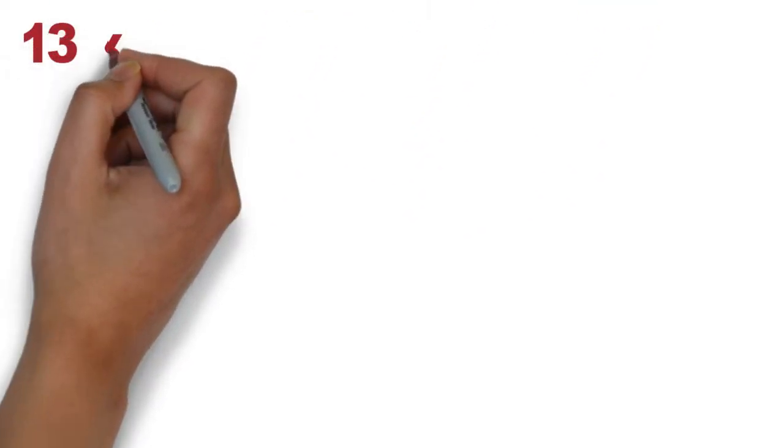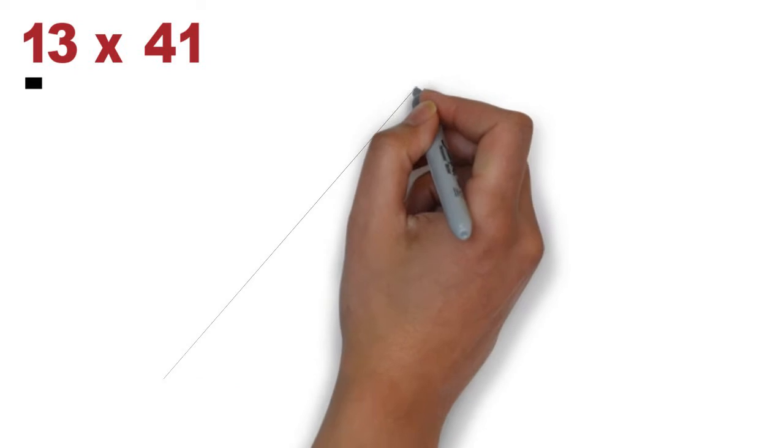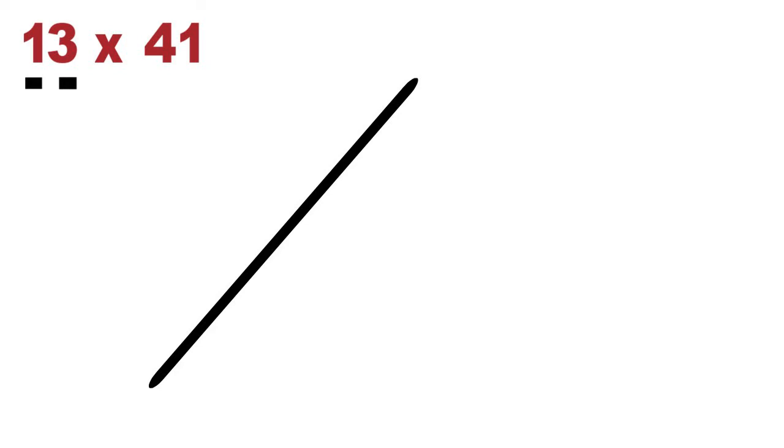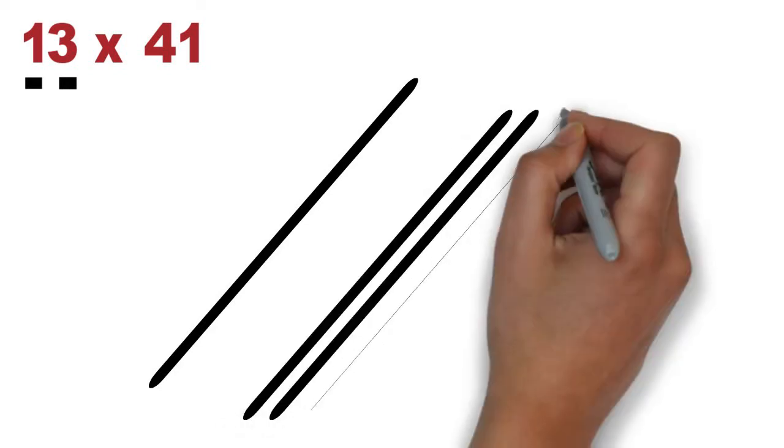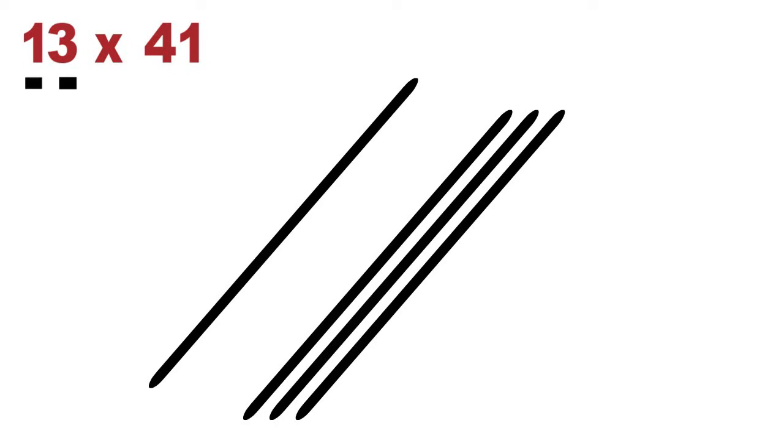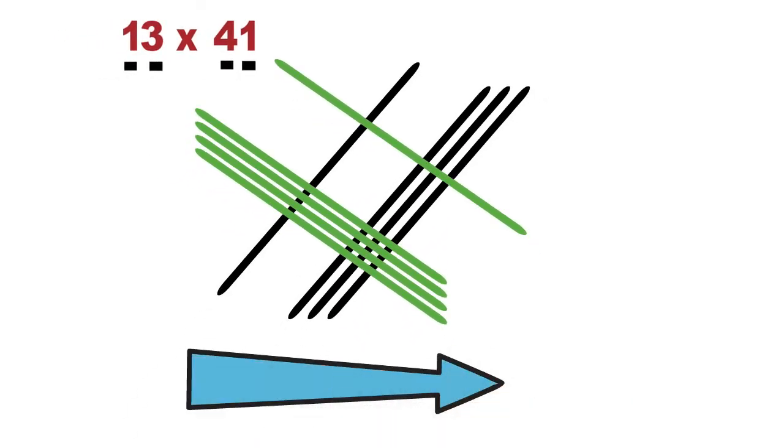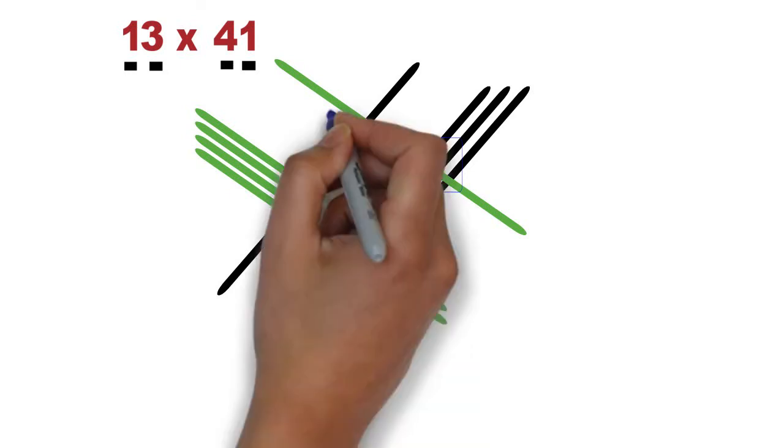Let's take another example by multiplying 13 with 41 using lines. So, are you ready? Let's draw the lines. The first digit of number 13 is 1. So, we draw 1 line. And for the second digit 3, we draw 3 lines after leaving some space. 1, 2, and 3. For 41, we draw 4 lines for 4. 1, 2, 3, and 4. And 1 line for 1. Don't forget, in each case, we went from left to right. And the 3 vertical zones are ready.